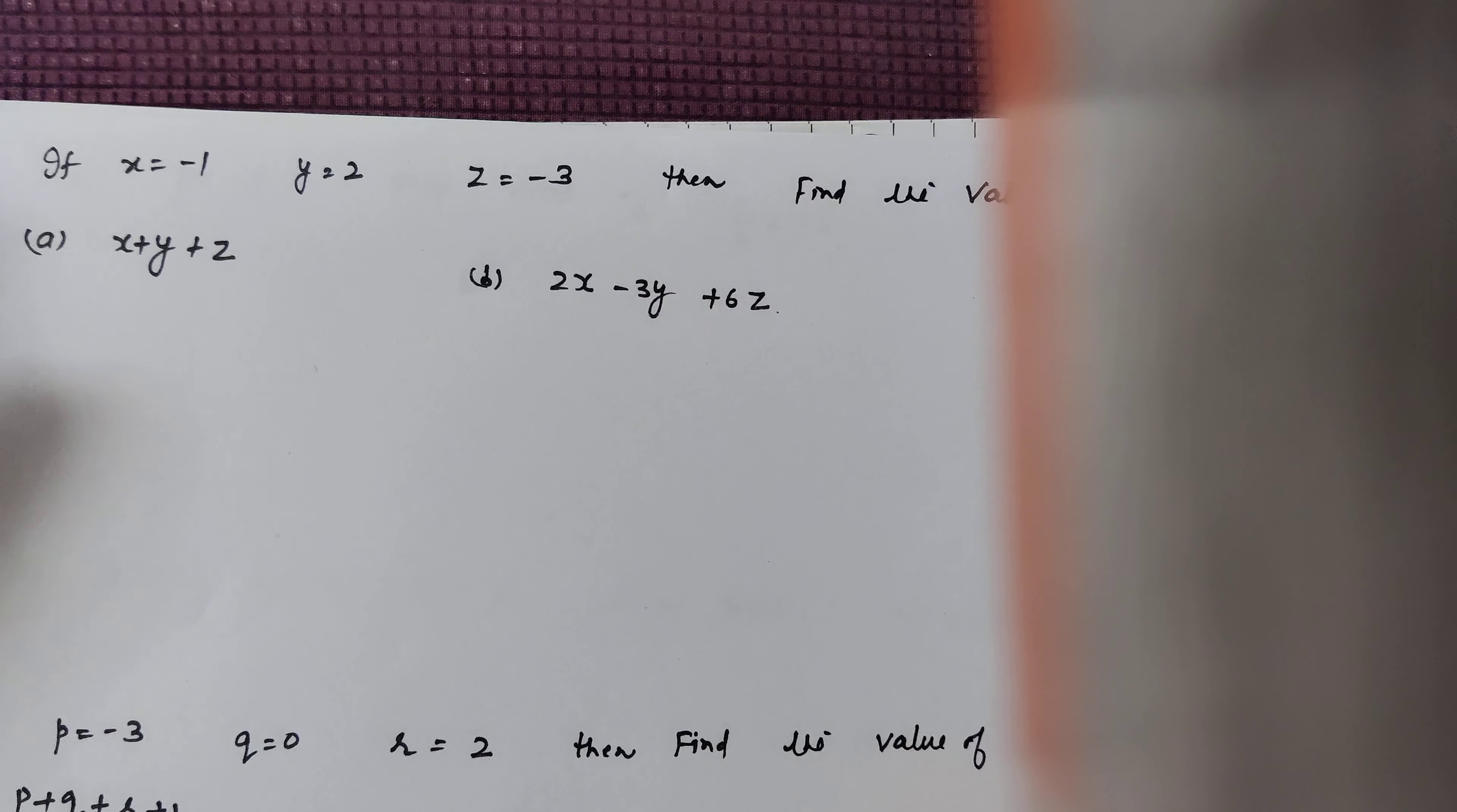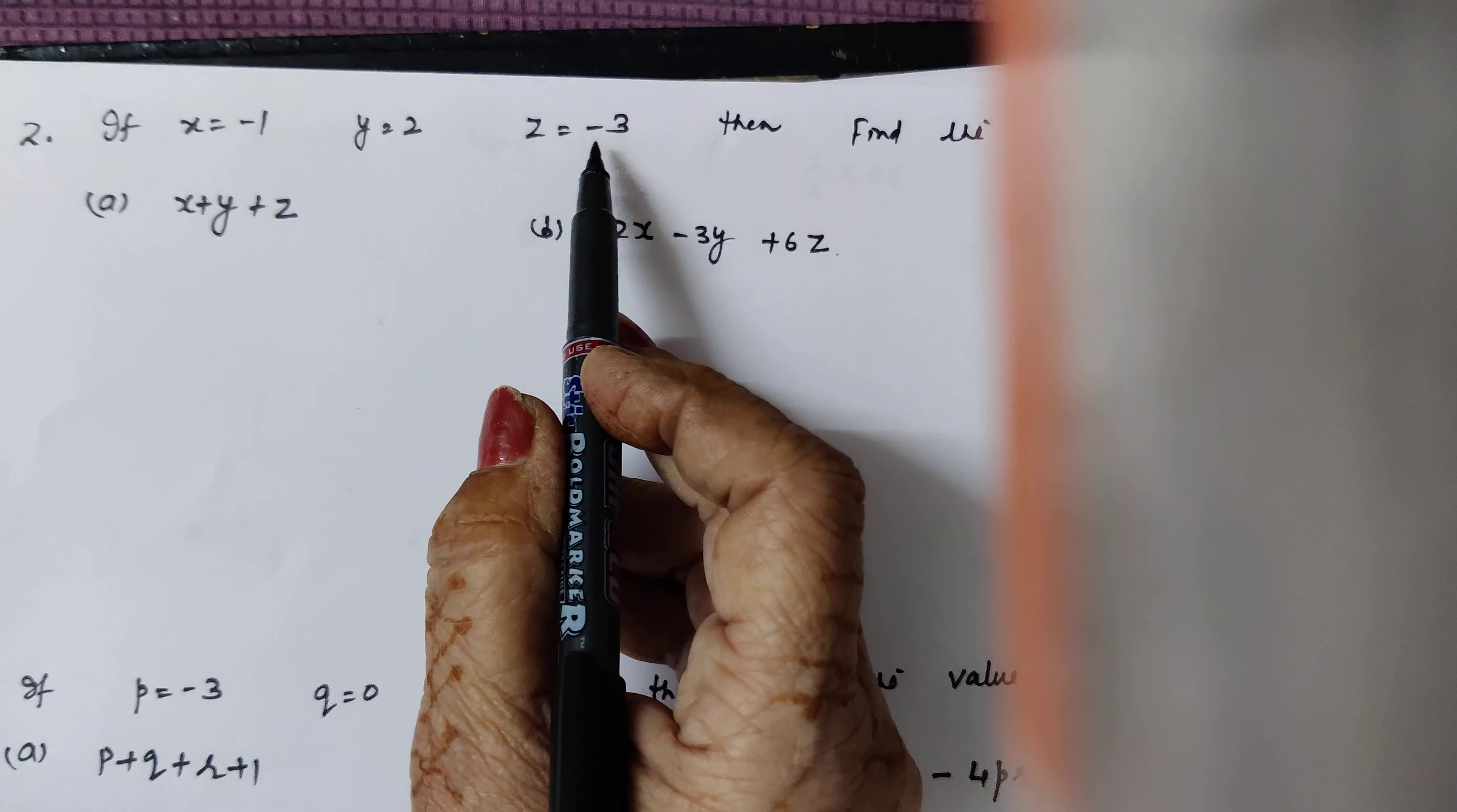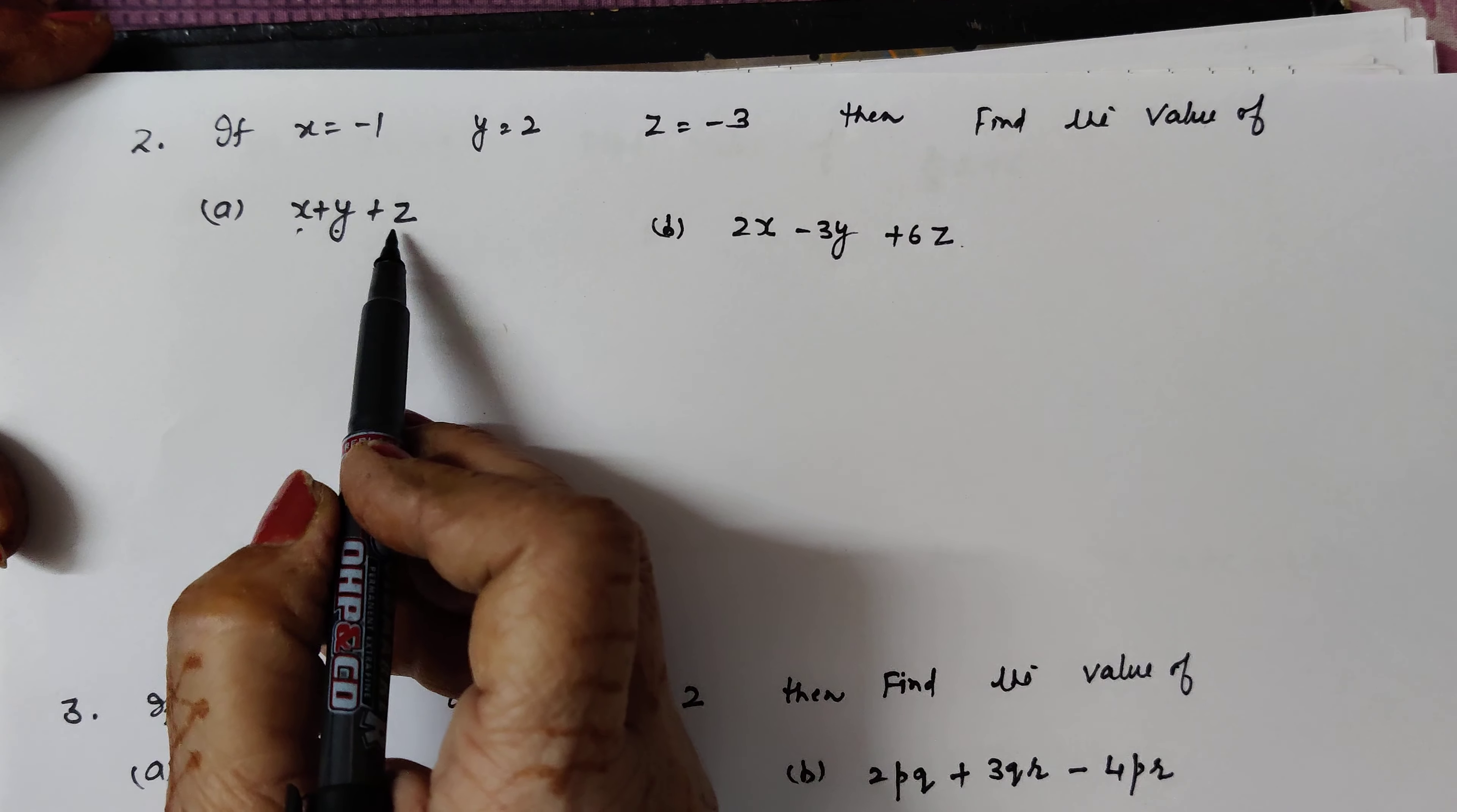So we are going to start the next, second sum. If x is equal to minus 1, y is equal to 2, z is equal to minus 3, then find the value of.